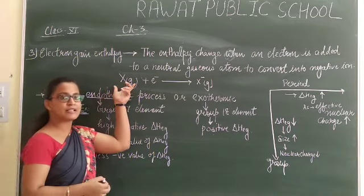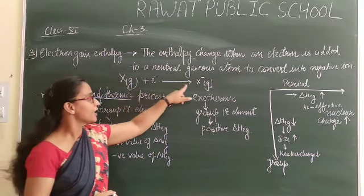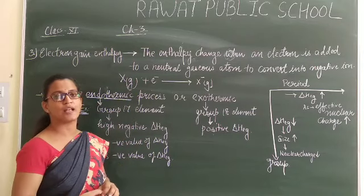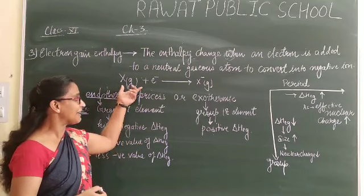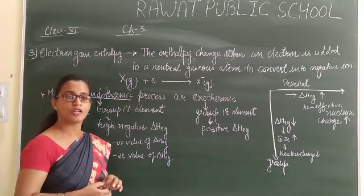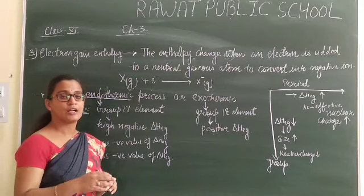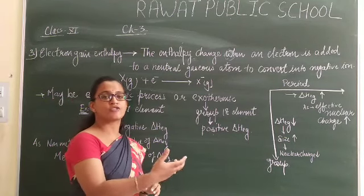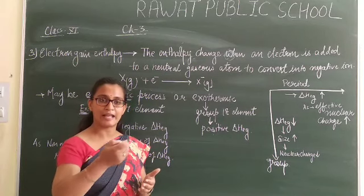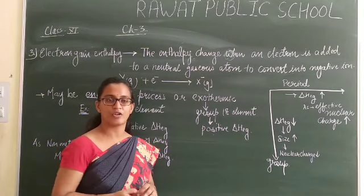When an element is in the gaseous state in its elemental form, and we add one electron into it, it changes into a negative ion because one more electron is added into its valence shell. Whether energy is released or absorbed depends on the electronic configuration of the element. Sometimes it is very easy to add the electron because the element will complete its electronic configuration.